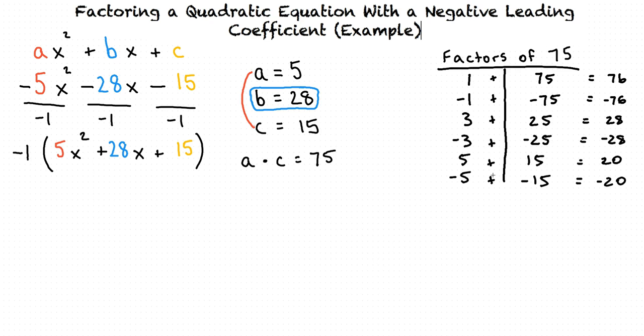After adding together each pair of factors, we can see that 3 plus 25 equals our b term, 28. So now we know that 3 and 25 will be the two numbers that we're going to use to write our new equation.